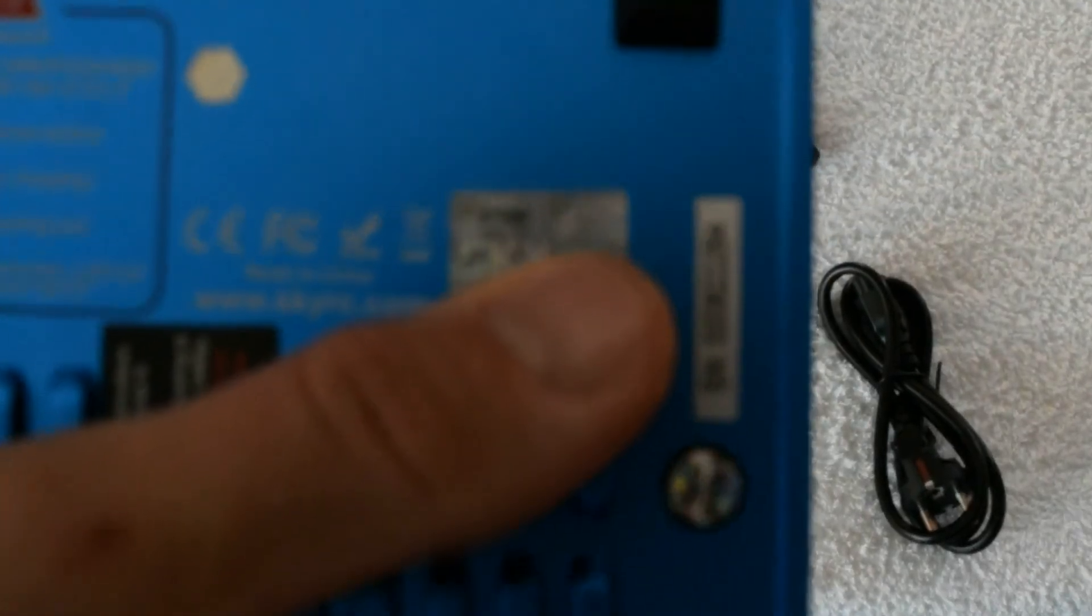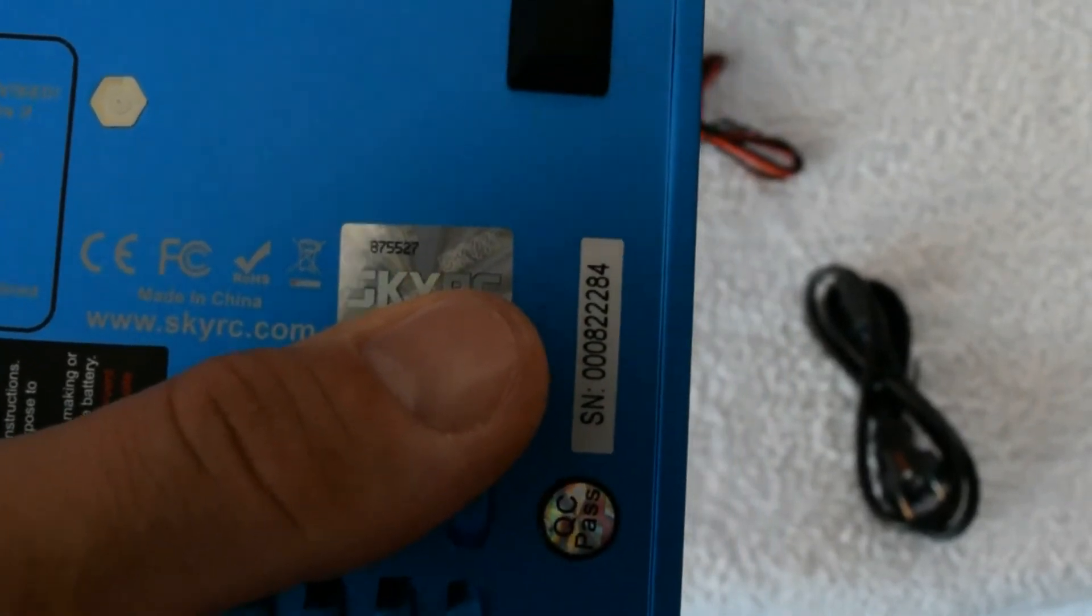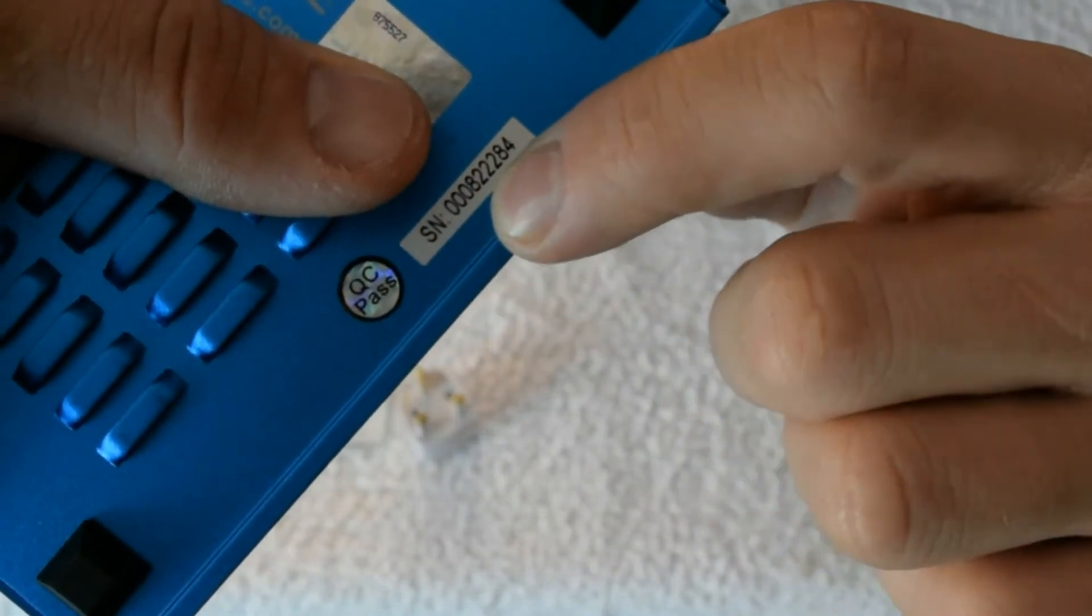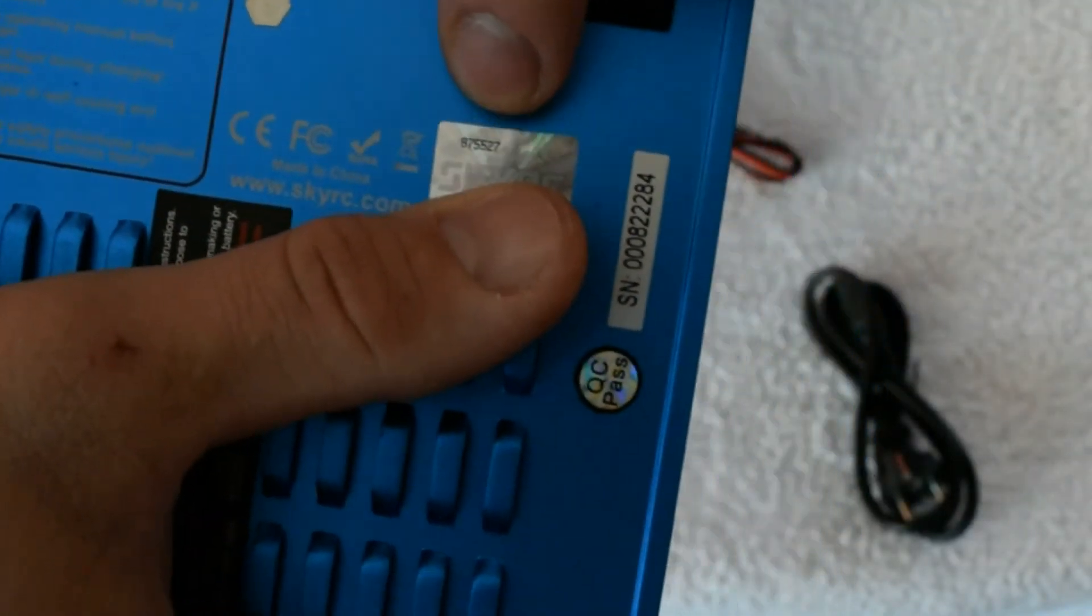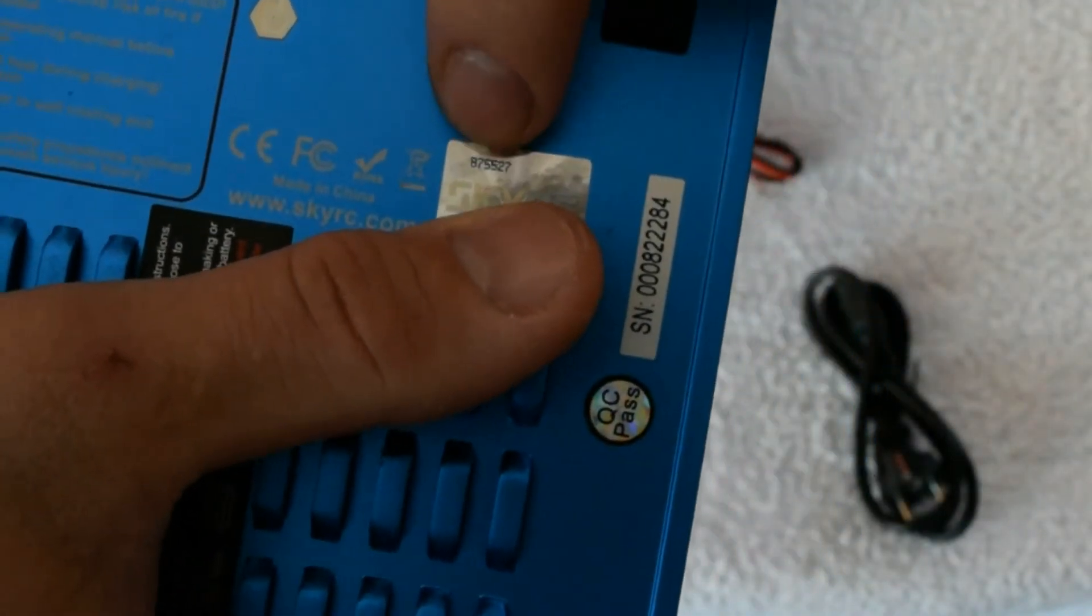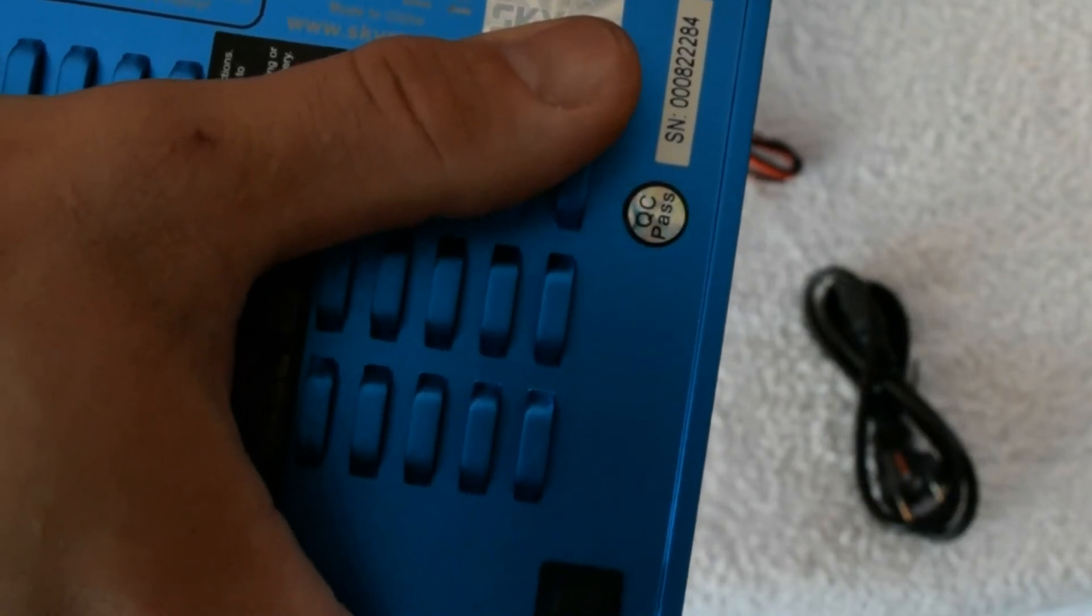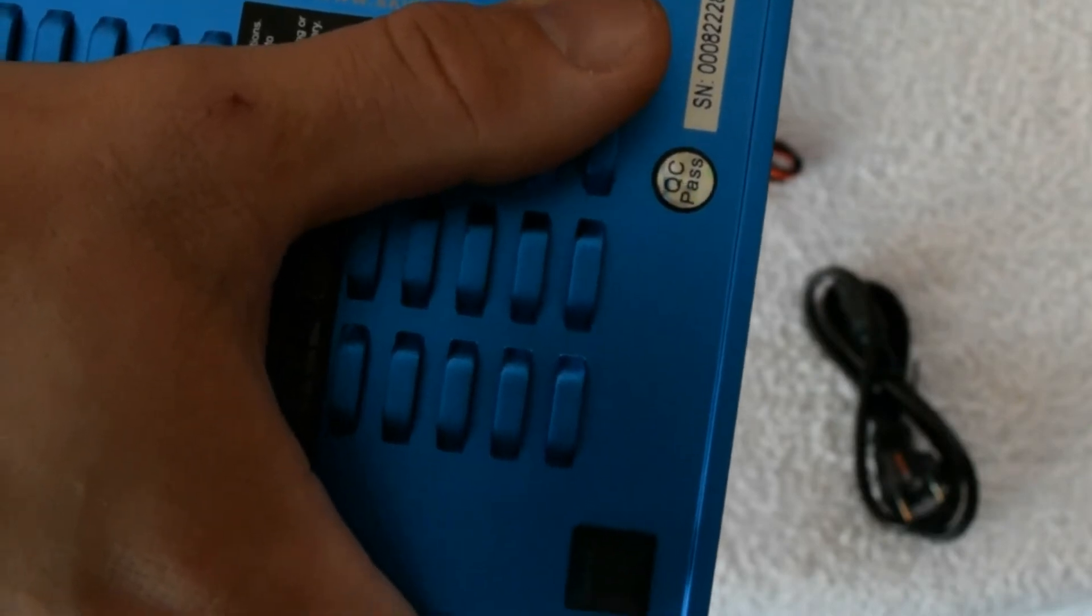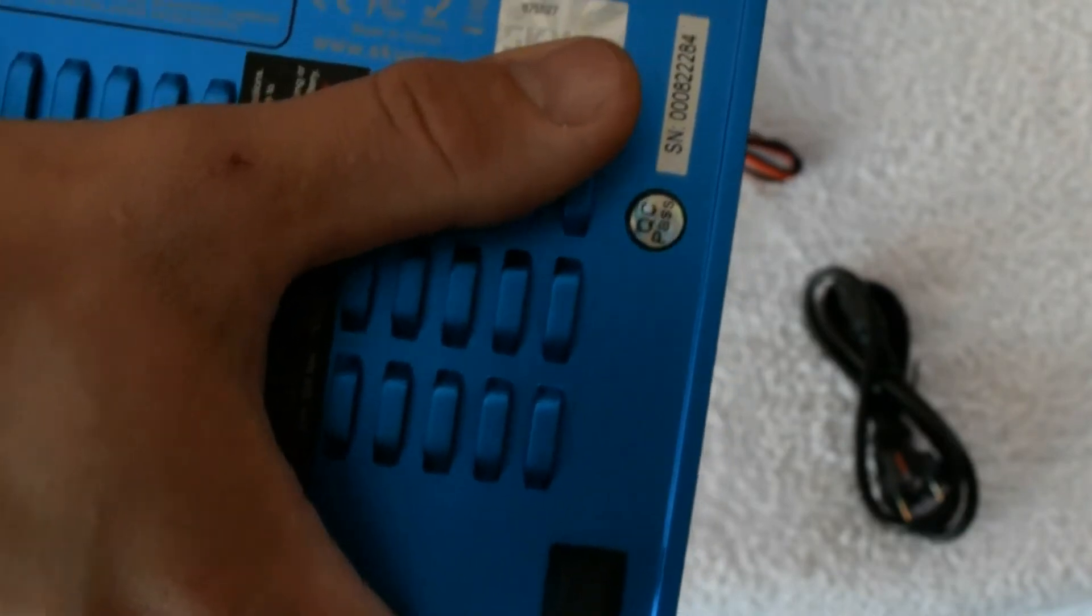Okay, this they say SN, this is the serial number of the product, this one over here. It's small, yeah you can see this, this is the actual number they say there in the website.